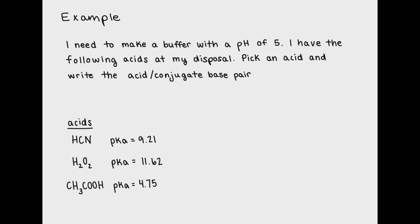Alright, now let's do a practice problem. Pause the video and give it a try. We're told we want to make a buffer with a pH of 5. We have the following acids at our disposal. We need to pick an acid and write the conjugate acid-base pair.